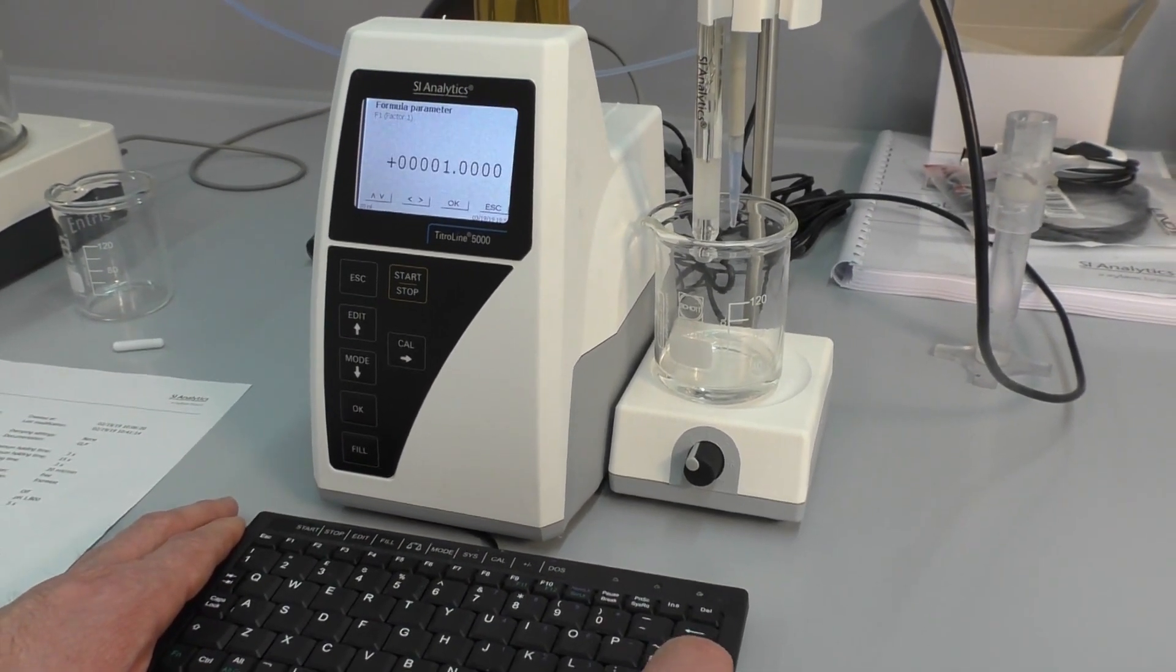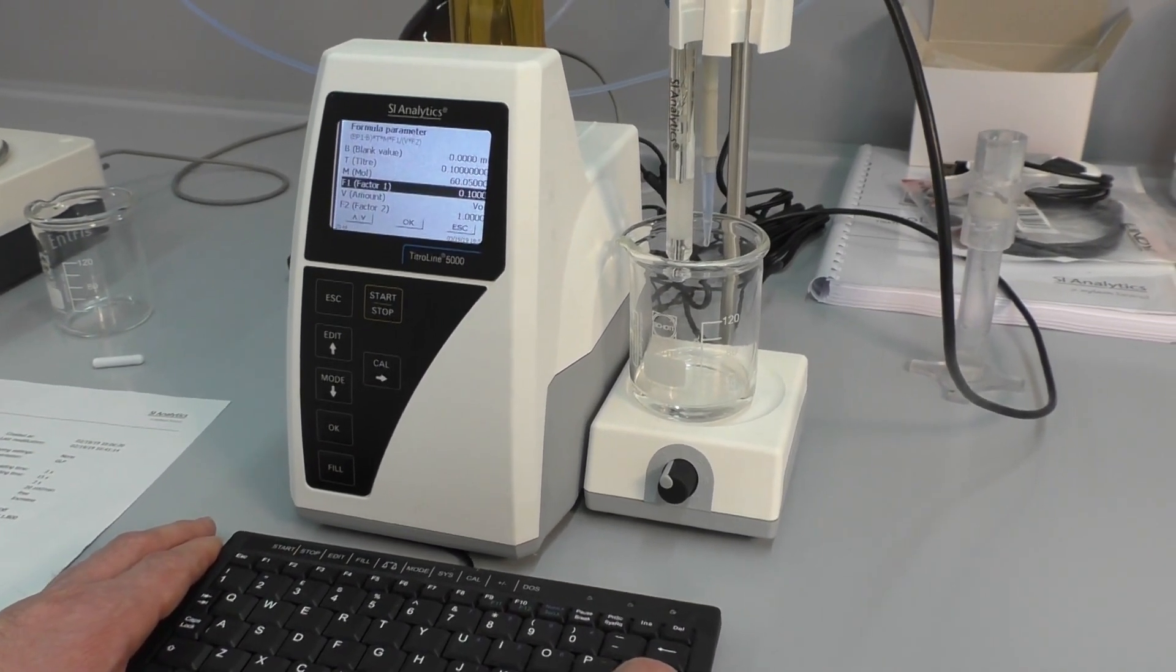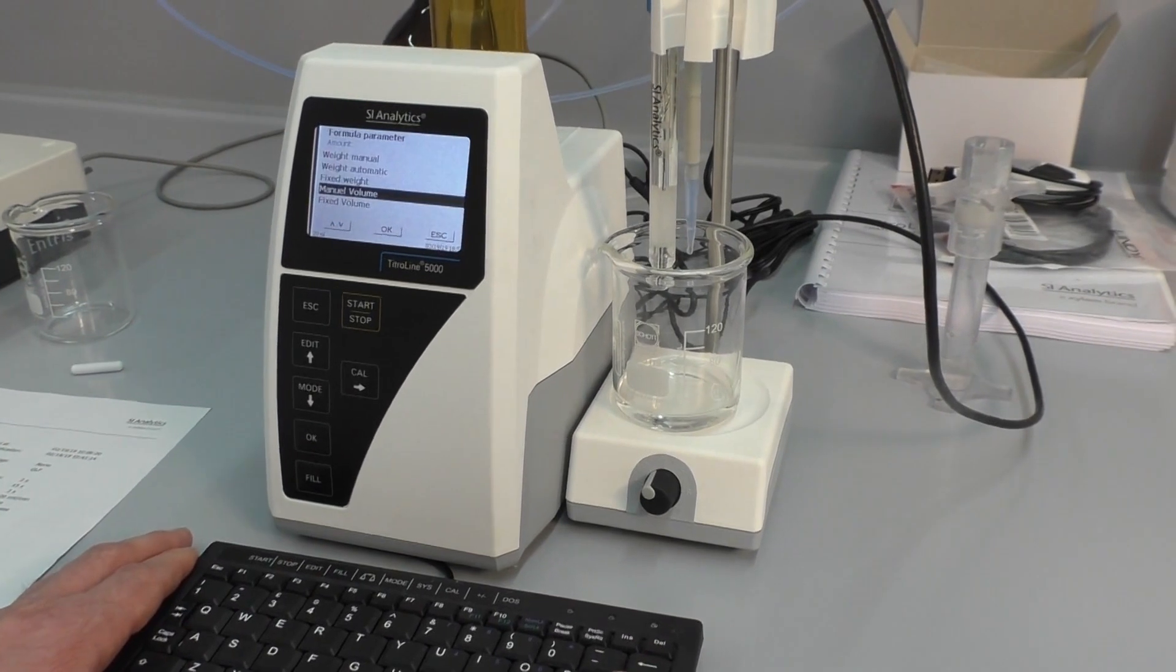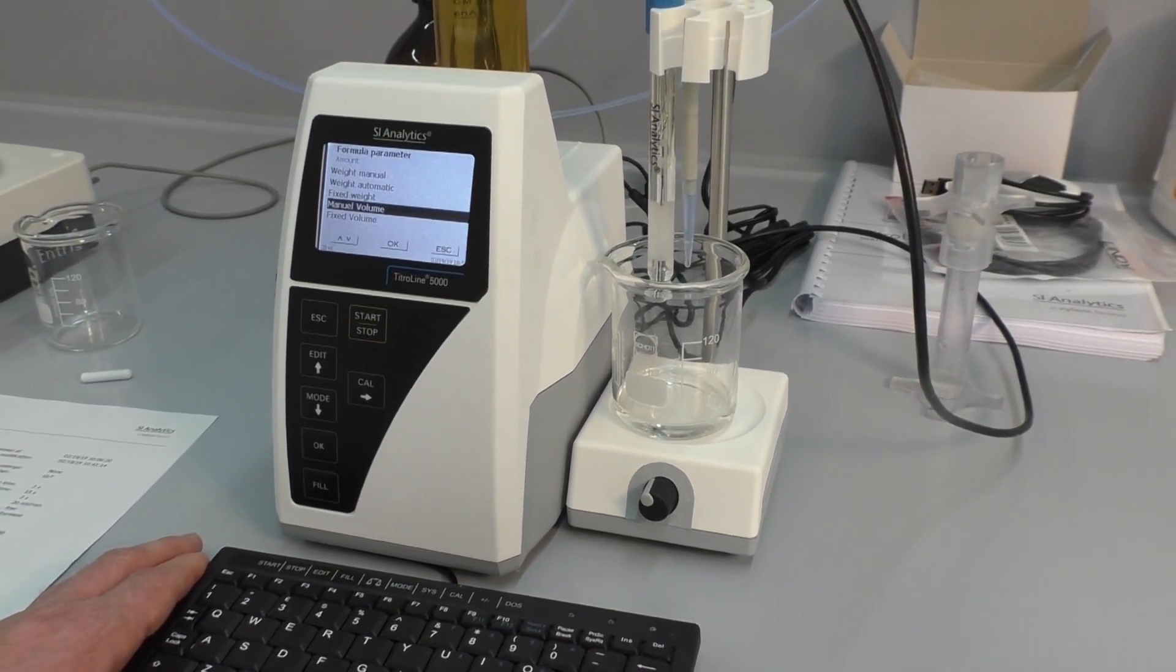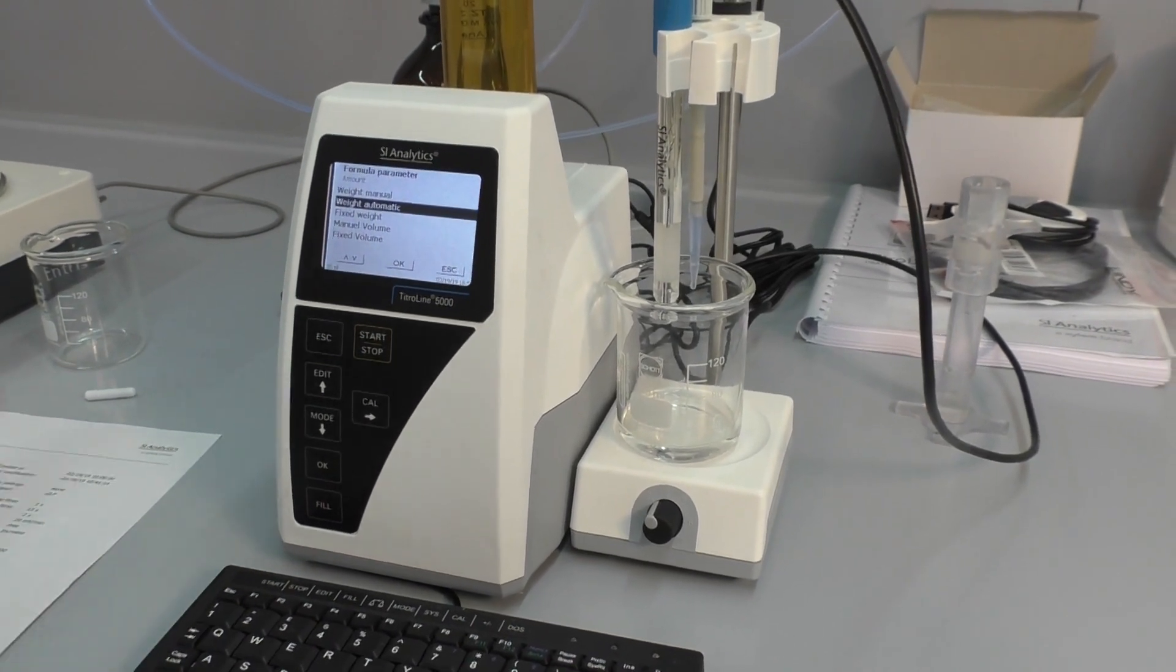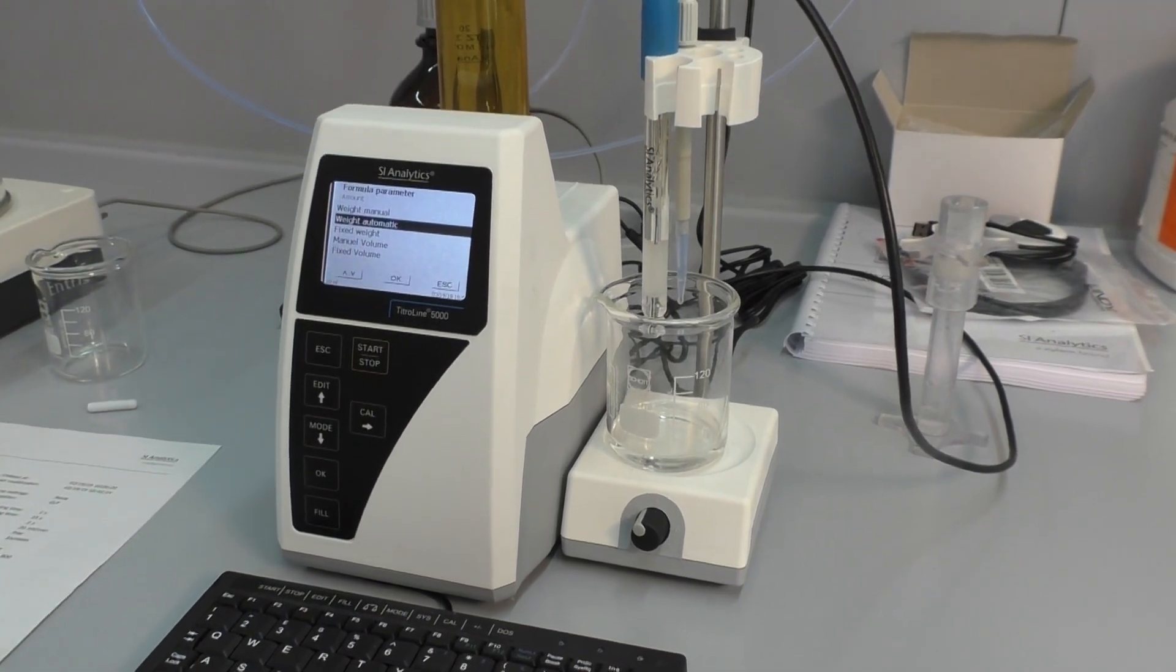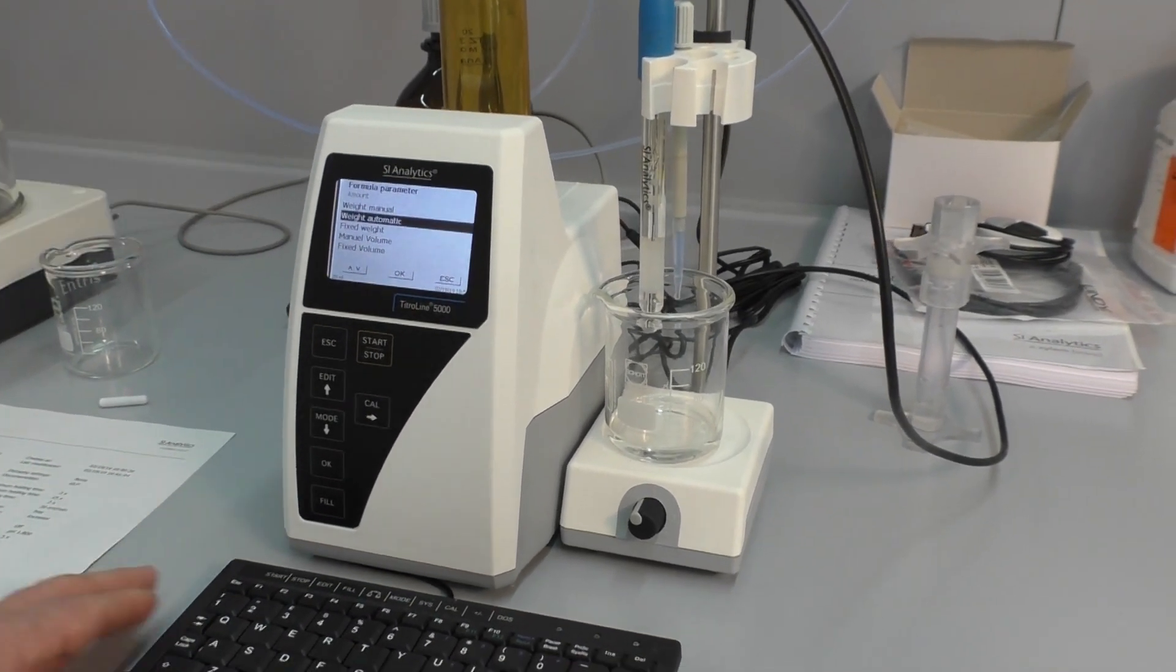The factor has to be changed because now we want to calculate in percentage, and percentage means gram per 100 gram. The volume is changed to weight manual or weight automatic because we are using now a balance, and the balance is connected to the Titration Line 5000 and we can also use weight automatic.